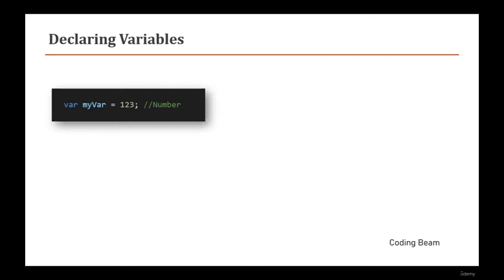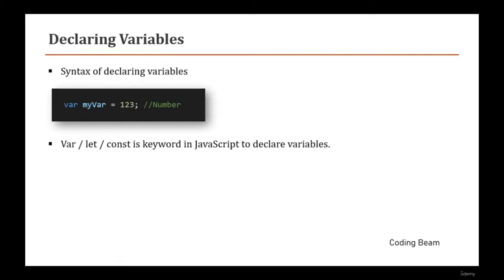To declare variables there is a reserved keyword 'var', followed by the variable name and then the value. The keywords var, let, or const are used to declare variables in JavaScript. let and const were introduced in ES6 as new ways to create variables.